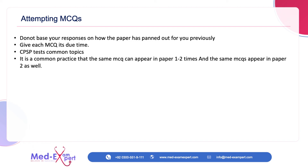MCQ میں وقت ضائع کرنے کی کوئی ضرورت نہیں اور CPSP زیادہ تر common topics ہی test کرتا ہے۔ یہ بھی common ہوا ہے کہ ایک ہی MCQ ایک ہی paper میں دو دفعہ repeat ہوا ہے اور paper 1 کا MCQ paper 2 میں repeat ہوا ہے۔ اگر آپ answer کے بارے میں sure ہیں تو دونوں دفعہ وہی select کریں، اور اگر sure نہیں تو دونوں میں الگ الگ option select کر لیں تاکہ کم از کم ایک ٹھیک ہو جائے۔